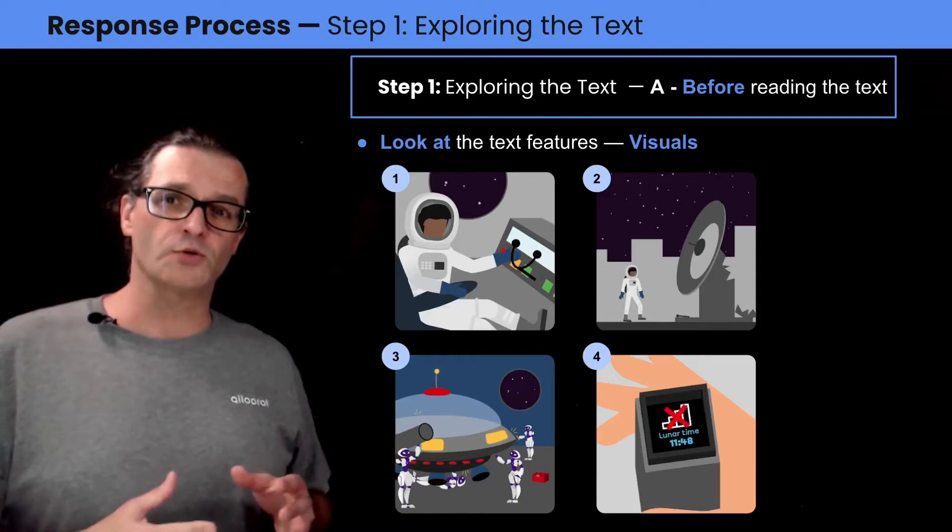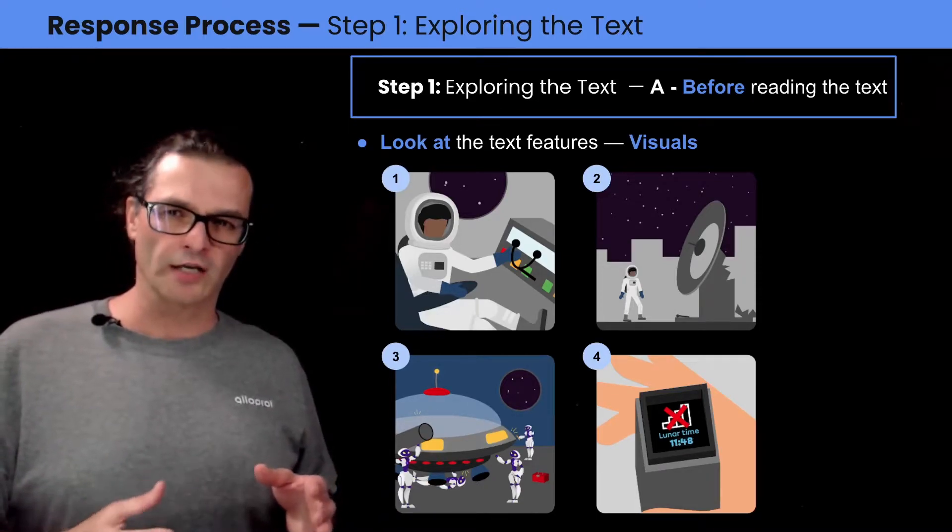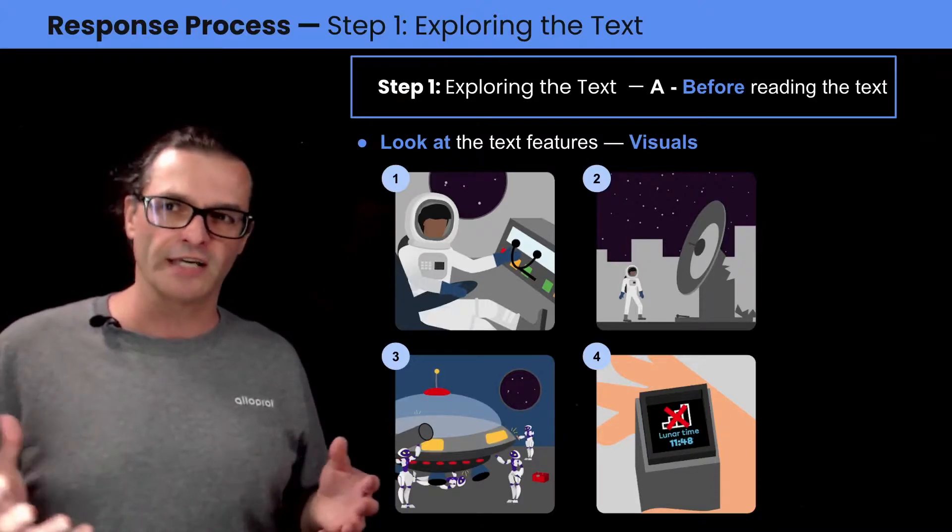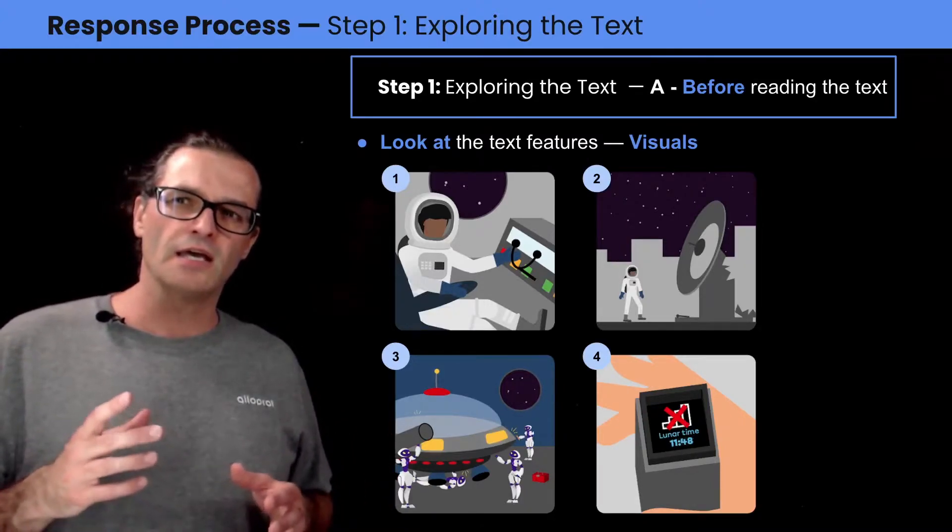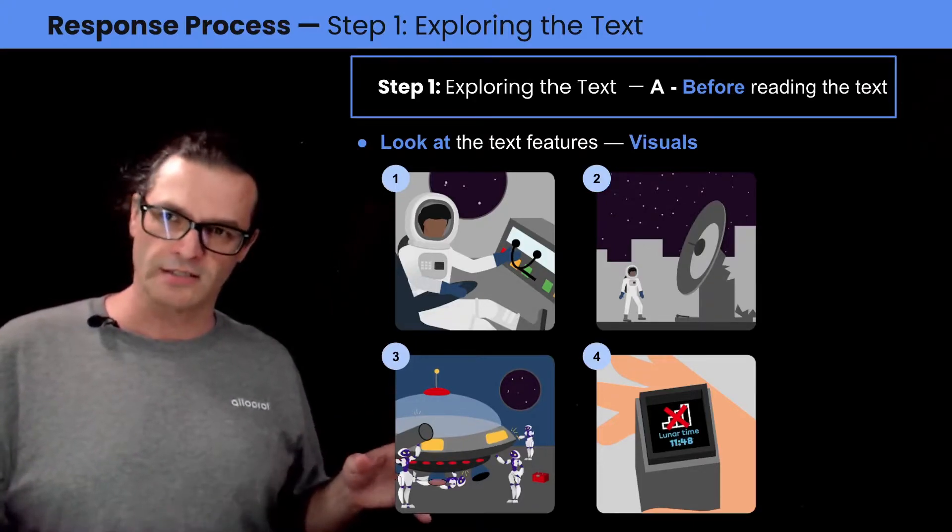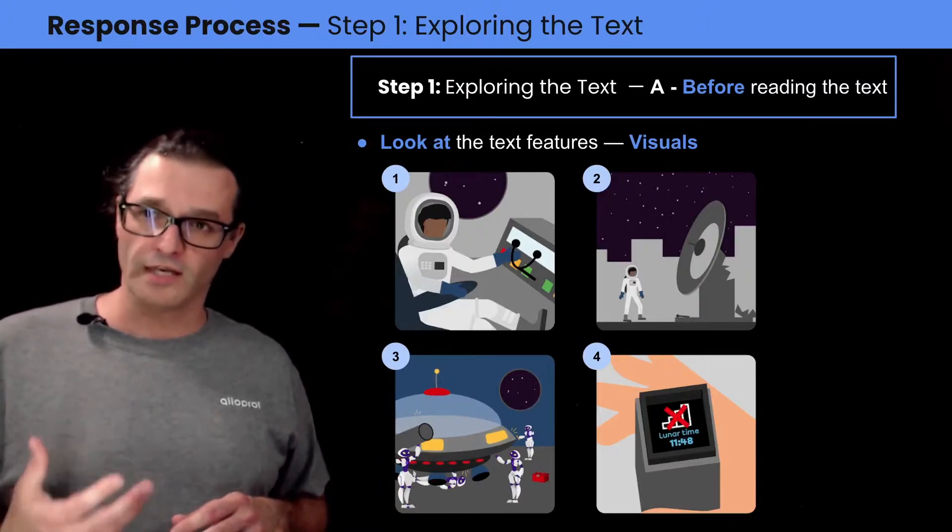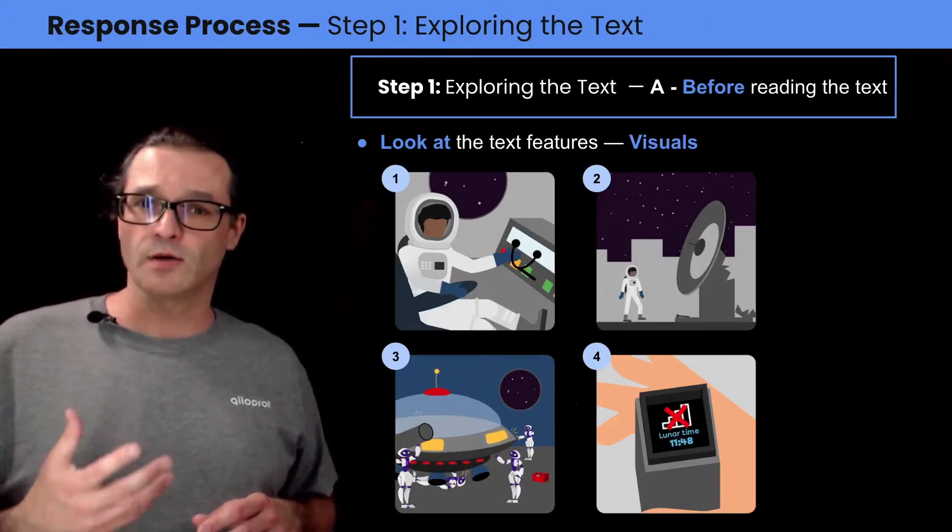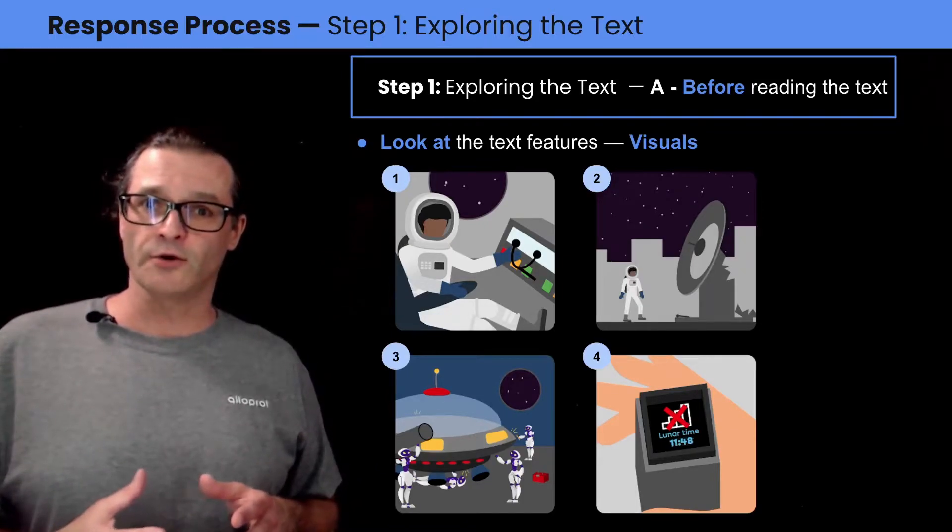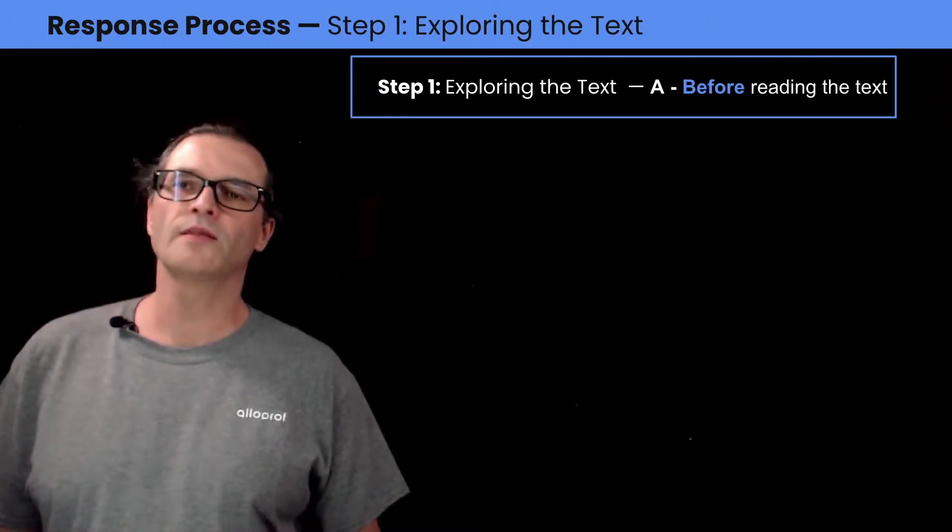The third image shows us robots and a spaceship. They seem to be working on it, maybe fixing damage or they could be modifying it for some reason. It's interesting to note, though, that the character of the astronaut is not present in that image. In the fourth image, we see someone holding some sort of device, which could be either a sensor or a communications device.